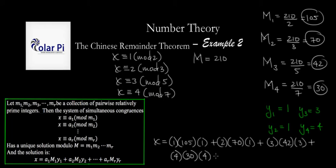So, if you do all the multiplication here and all the addition, you'll find that X is 1103, but you need to reduce this number mod M. So, mod 210, you'll find that 1103 is congruent to, what is it congruent to? 53 mod 210.